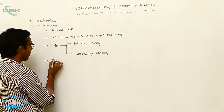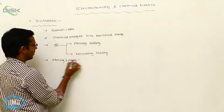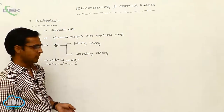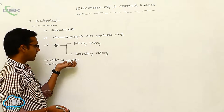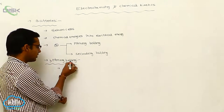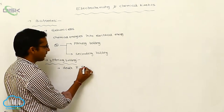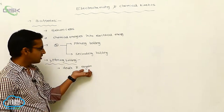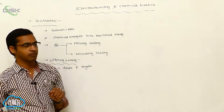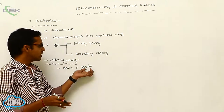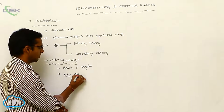The first type is the primary battery. A primary battery means that after use over a period of time, the battery undergoes death and there is no use of recharging it. After discharging, it cannot be used again. The primary battery is used only for a certain period of time, after which it is discarded.